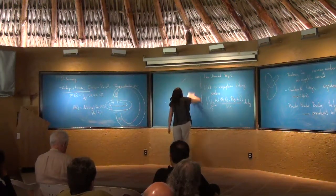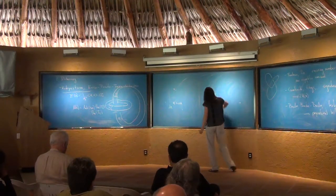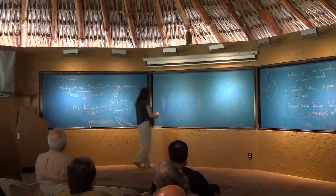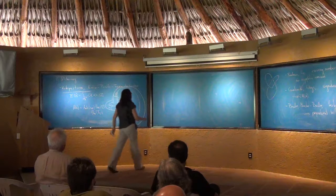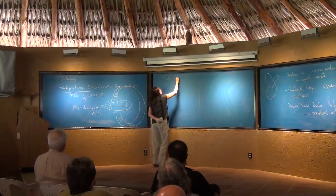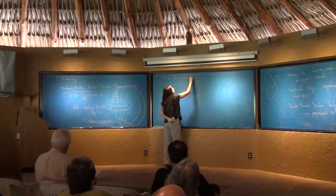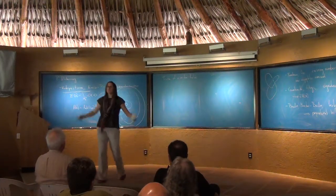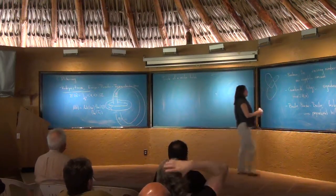Now I'll spend the remaining time on what we defined: a new invariant called the trunk of a vector field. It's based on an invariant for a knot called the trunk of a knot.